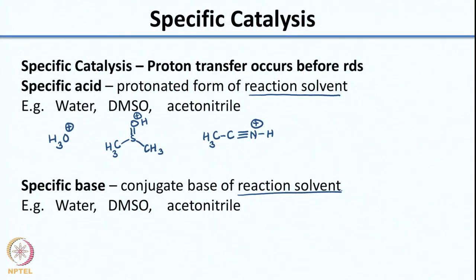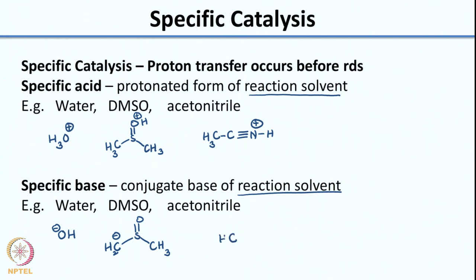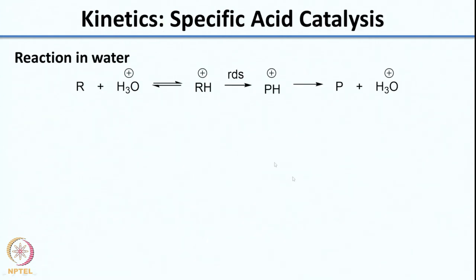Similarly, the specific base is the conjugate base of the reaction solvent, not any other external base that you are adding. If you consider water, the conjugate base would be OH-. If you are looking at DMSO, the conjugate base would be the carbanion. If you are looking at acetonitrile, that conjugate base is the specific base. To get a deeper understanding of why no other concentration of acid or base has an impact on the reaction rate, let us look at a reaction in water for simplicity - you can choose any other solvent and it would give the same kinetic expression.